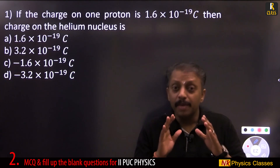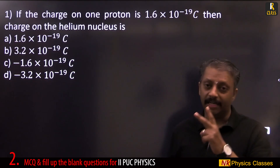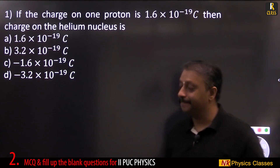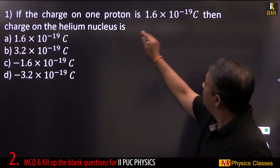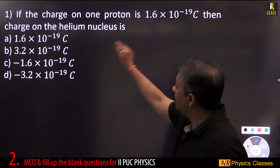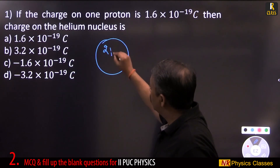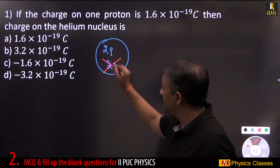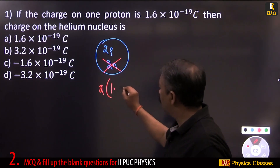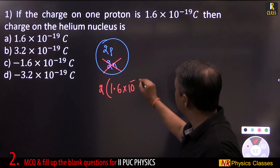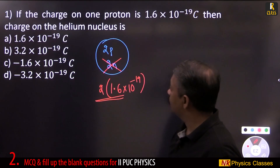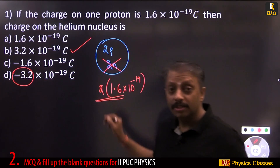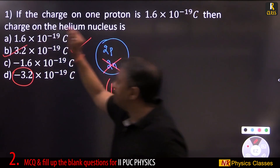These multiple choice questions are from the point of view of board exams — first main, second main, fill-in-the-blank, as well as multiple choice questions. Let us start: if the charge on one proton is 1.6×10⁻¹⁹ C, then the charge on a helium nucleus? Helium has two protons and two neutrons; neutrons are neutral, protons are positively charged. Therefore, two times 1.6×10⁻¹⁹ = 3.2×10⁻¹⁹ C. That is the answer.